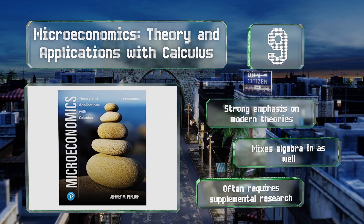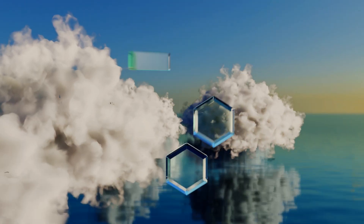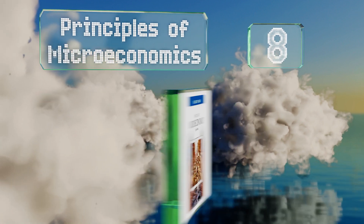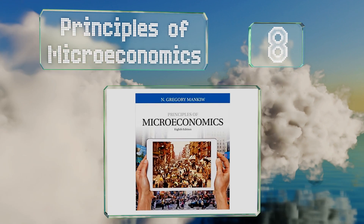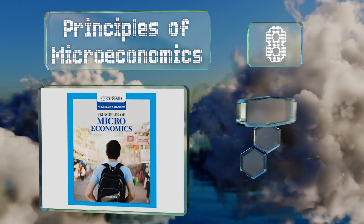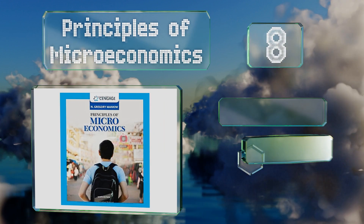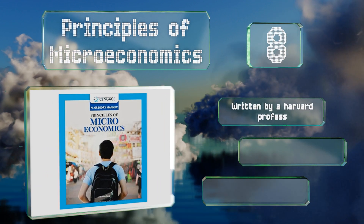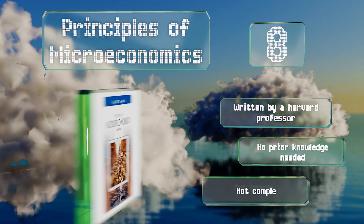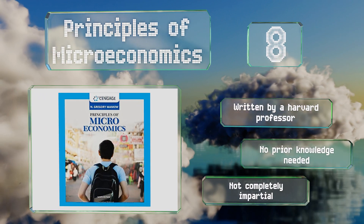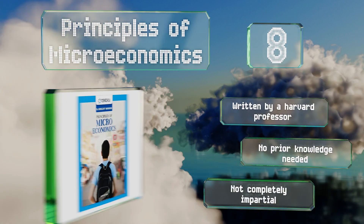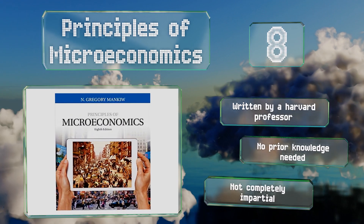Coming in at number eight, N. Gregory Mankiw's best-selling Principles of Microeconomics uses concise writing to convey the fundamentals as quickly as possible without getting mired in technical terms or going off on tangents. It also features contributions from award-winning economists. It's written by a Harvard professor and no prior knowledge is needed. However, it's not completely impartial.